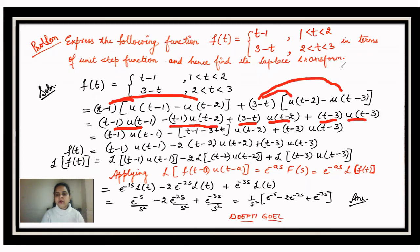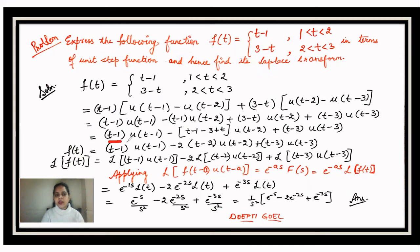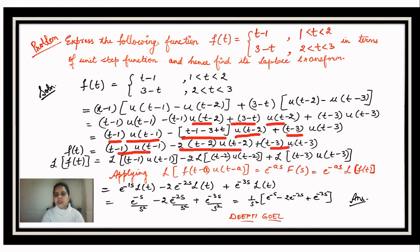Collecting terms by unit step function: only one term for u(t - 1), which is (t - 1)·u(t - 1). For u(t - 2), taking the common factor, the coefficient is -(t - 1) + (3 - t) = -(t - 1 - 3 + t) = -(2t - 4) = -2(t - 2). So we have (t - 1)·u(t - 1) - 2(t - 2)·u(t - 2) + (t - 3)·u(t - 3).